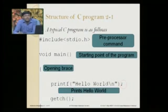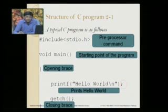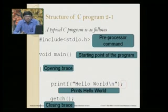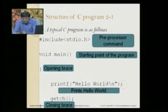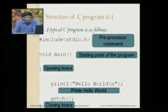Why do we write hash include stdio.h? Hash include is a preprocessor compiler directive. To write and convert any program, we require a compiler. If we are using a C compiler, it is known as C language. If we are using a Java compiler, it is known as Java.